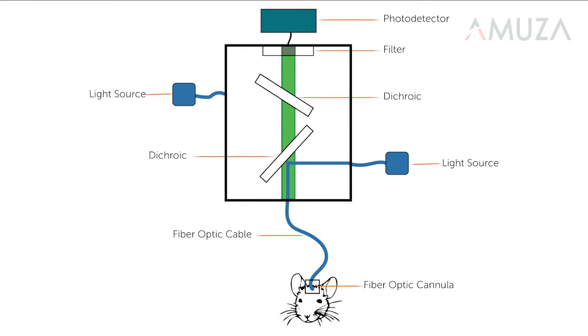Fiber photometry is one of the newest tools available to neuroscientists who wish to correlate behavior with neural activity. It's a powerful, ultra-fast technique used to measure calcium, neurotransmitters, and other molecules in vivo in real time.